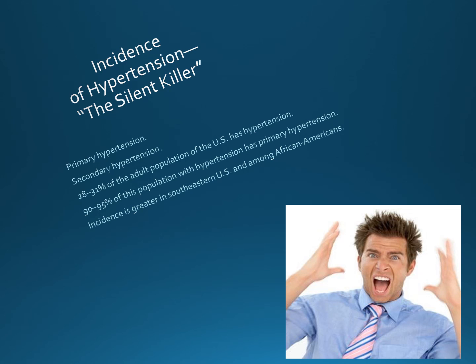About one-third of the U.S. population has hypertension, and of this amount, 90 to 95 percent have what is classified as primary or essential hypertension. This type develops gradually over many years with no identifiable cause. The second category is secondary hypertension, which is tied to a disease process.